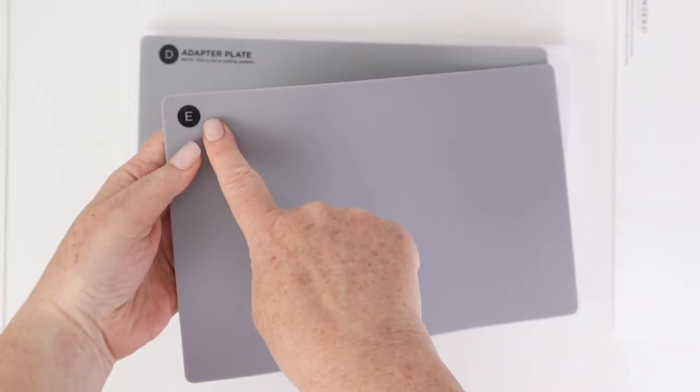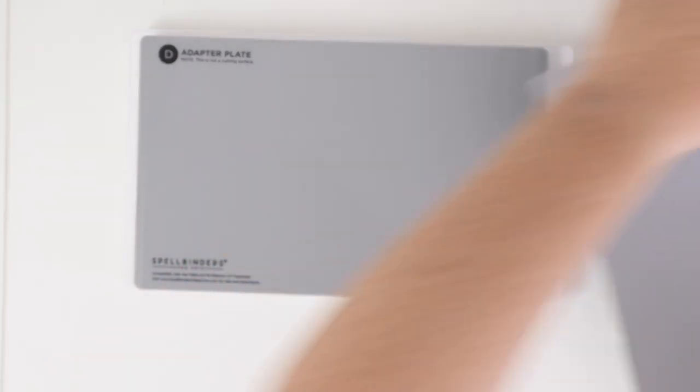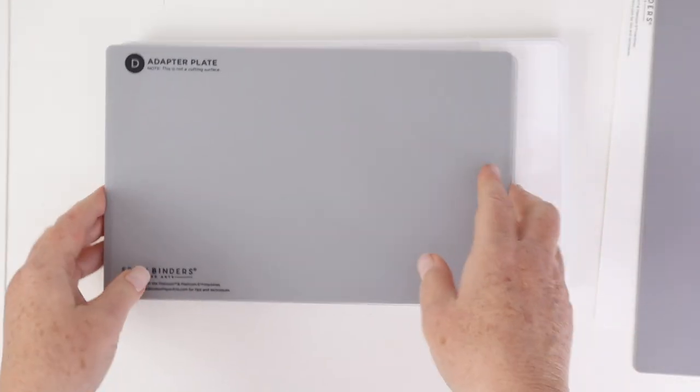Then you have, this is the embossing mat. So if you want to use your dies to emboss, this is the mat that you'll use, and there are instructions on the base and the top platform to show you how to do that.